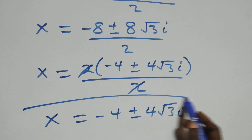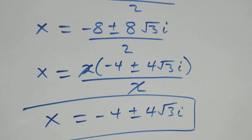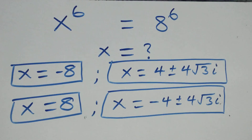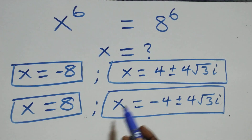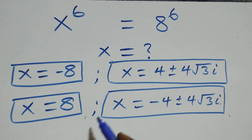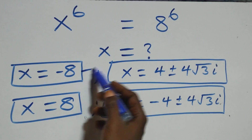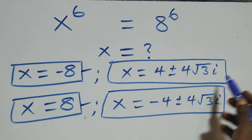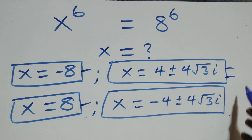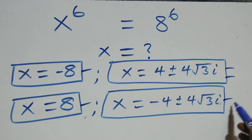We also have two complex solutions here. Therefore, all together we have six solutions in this problem: two real solutions and two sets of two complex solutions each.